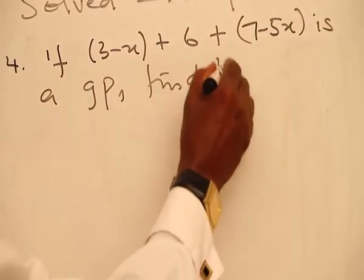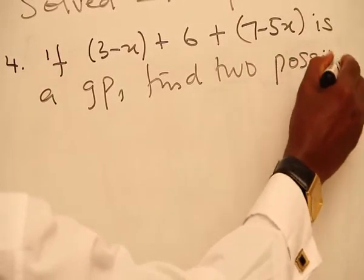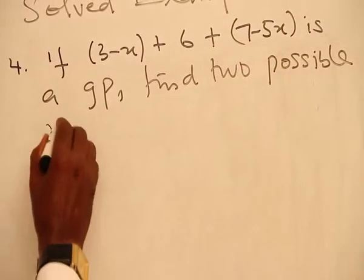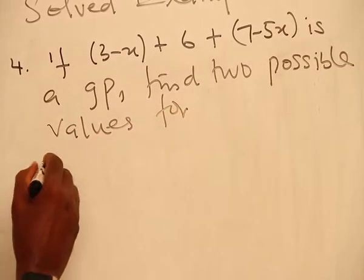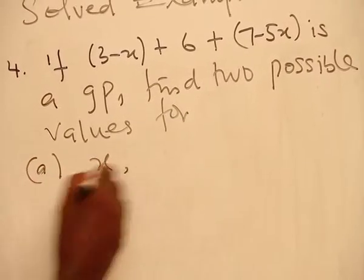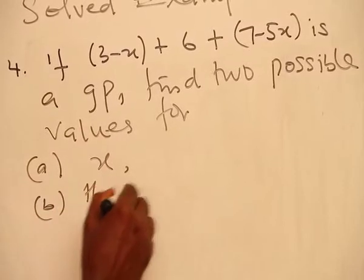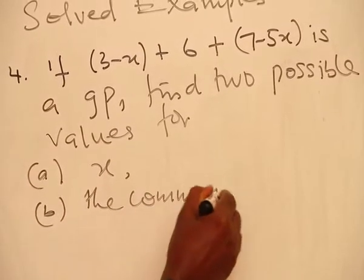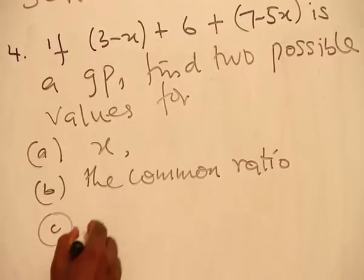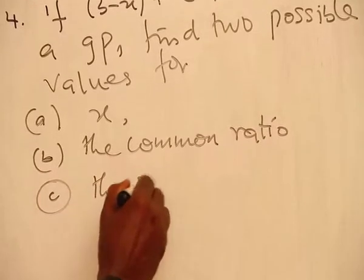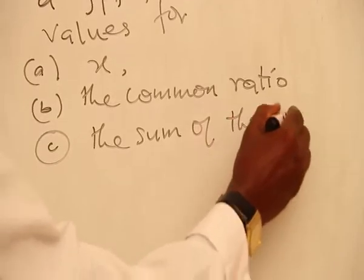find two possible values for: A, S; B, the common ratio; C, the sum of the GP.